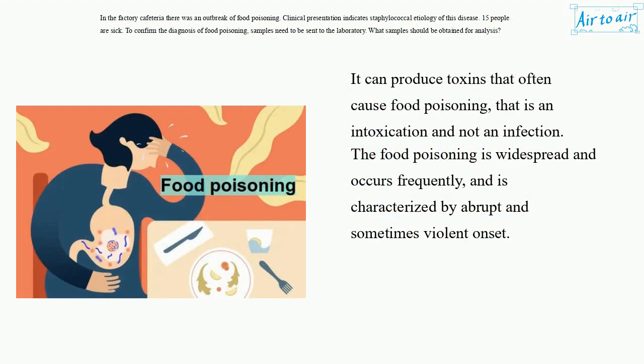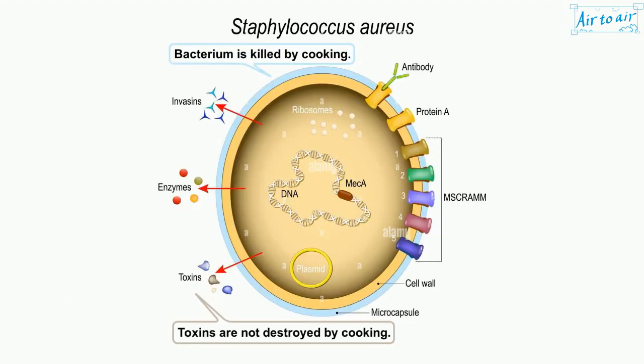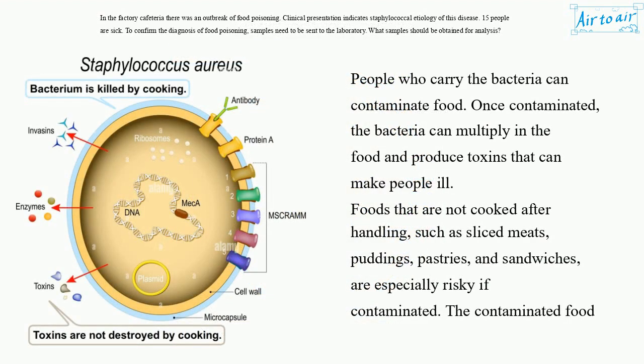It can produce toxins that often cause food poisoning — that is an intoxication and not an infection. The food poisoning is widespread and occurs frequently, and is characterized by abrupt and sometimes violent onset. People who carry the bacteria can contaminate food. Once contaminated, the bacteria can multiply in the food and produce toxins that can make people ill. Foods that are not cooked after handling, such as sliced meats, puddings, pastries, and sandwiches, are especially risky if contaminated.